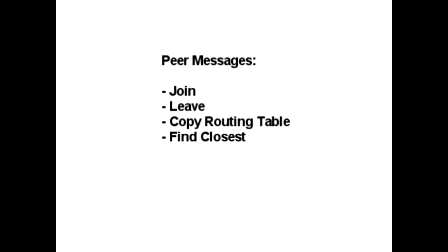To sum up peer-to-peer network technology, there are four different messages that each peer has to be able to send and receive. There is a join message, which results in the joining peer getting a GUID. There is a leave message, which results in the contacted peers removing the leaving peer from their routing tables. There is the copy routing table message, sent by the joining peer to get a starting routing table. And there is the find closest message, used when a peer is searching for another peer in the network. These four messages are enough to get a functioning peer-to-peer network.